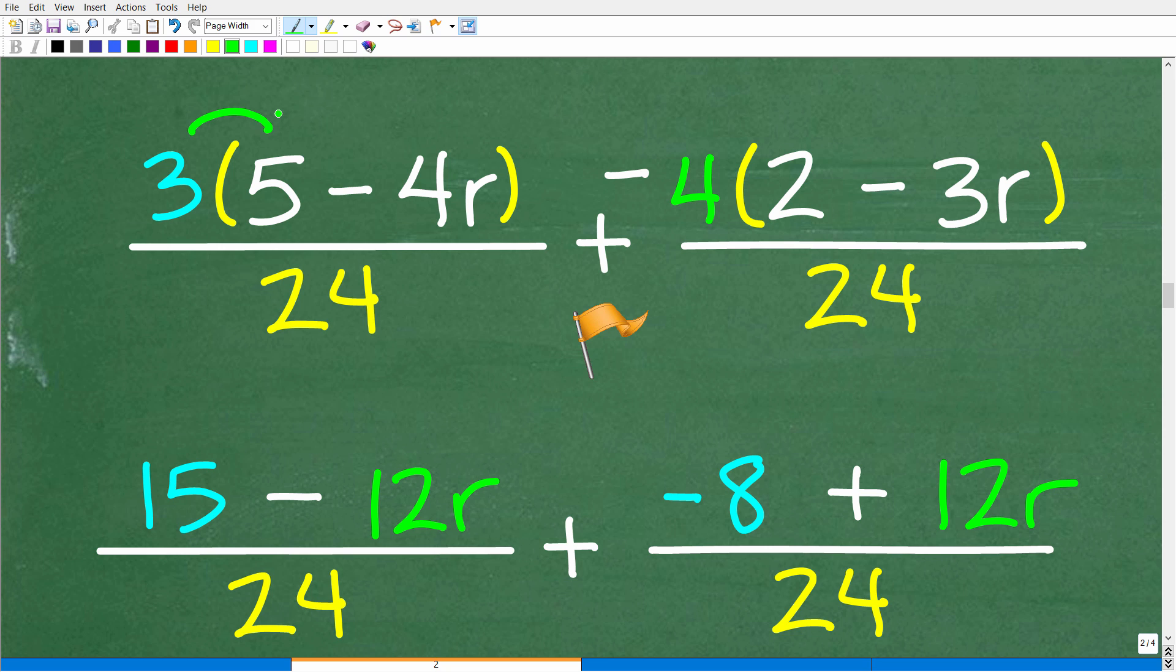So three times five is 15 and three times minus 4R is minus 12R. You can see that work right here. Now, we basically change this problem into an addition problem. So this is negative four, negative four times two is negative eight and negative four times this negative 3R is a positive 12R.